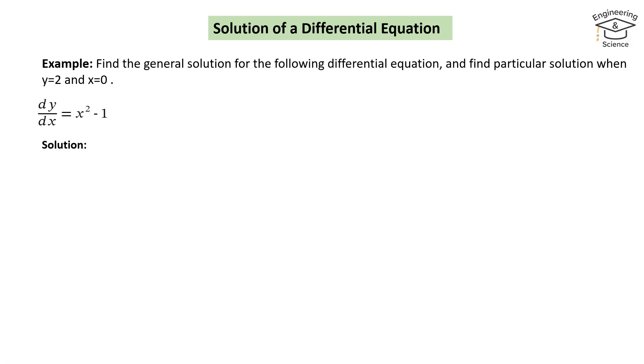Let us solve it. dy over dx is equal to x square minus 1. We have to arrange it in such a way dx and x terms must be in one place. So it becomes dy equal to x square plus 1 dx.